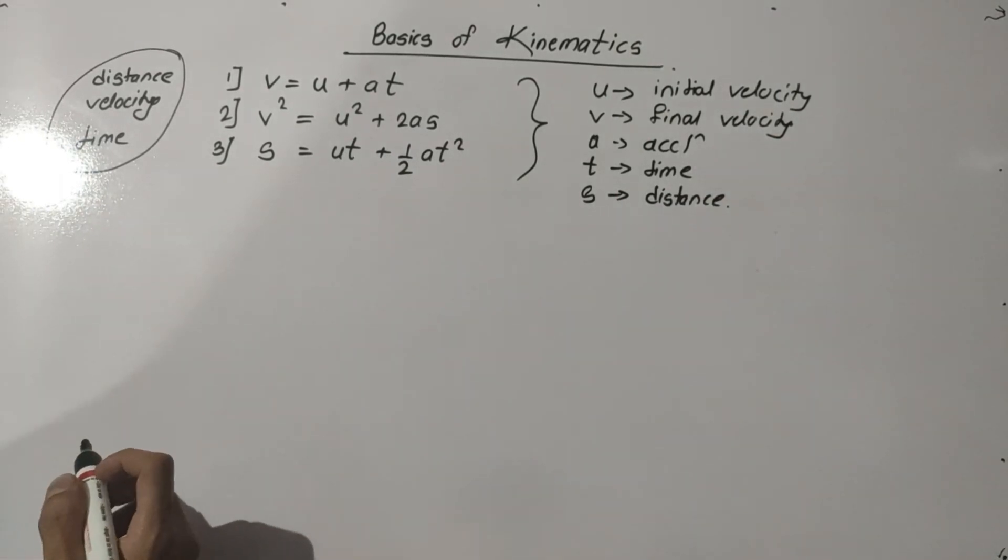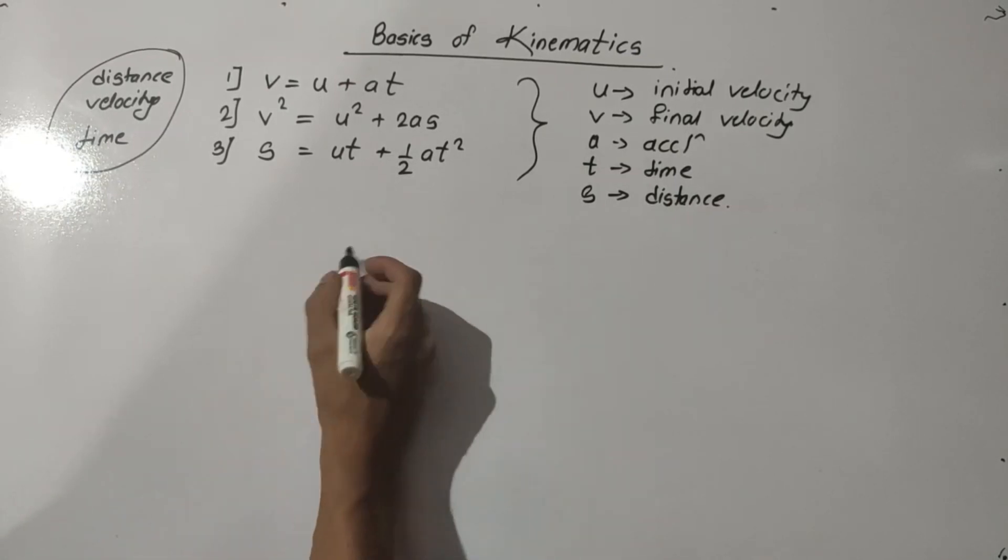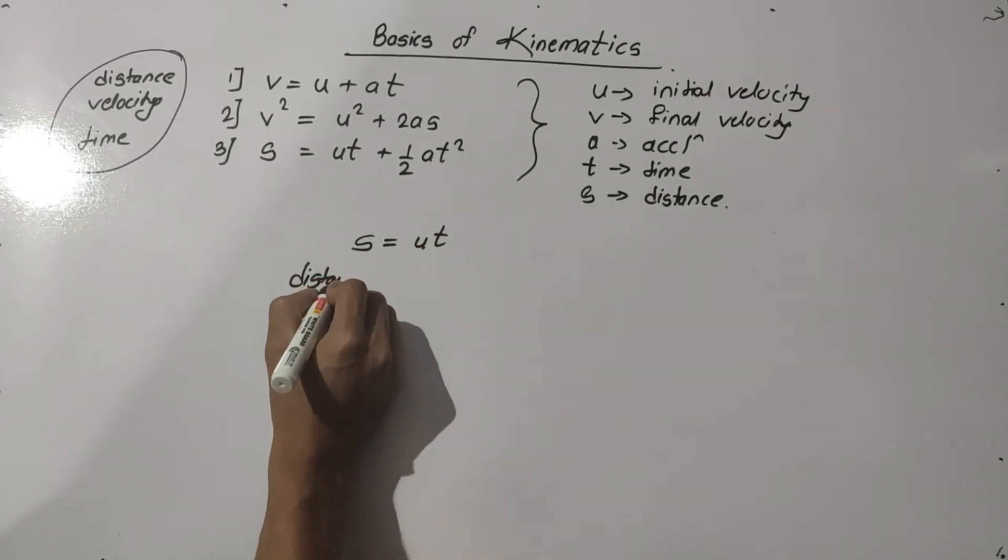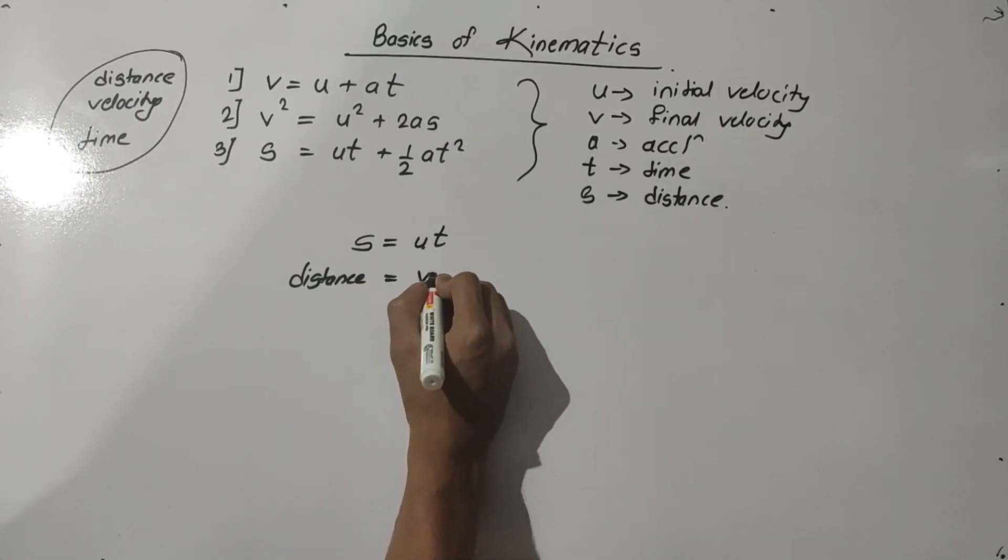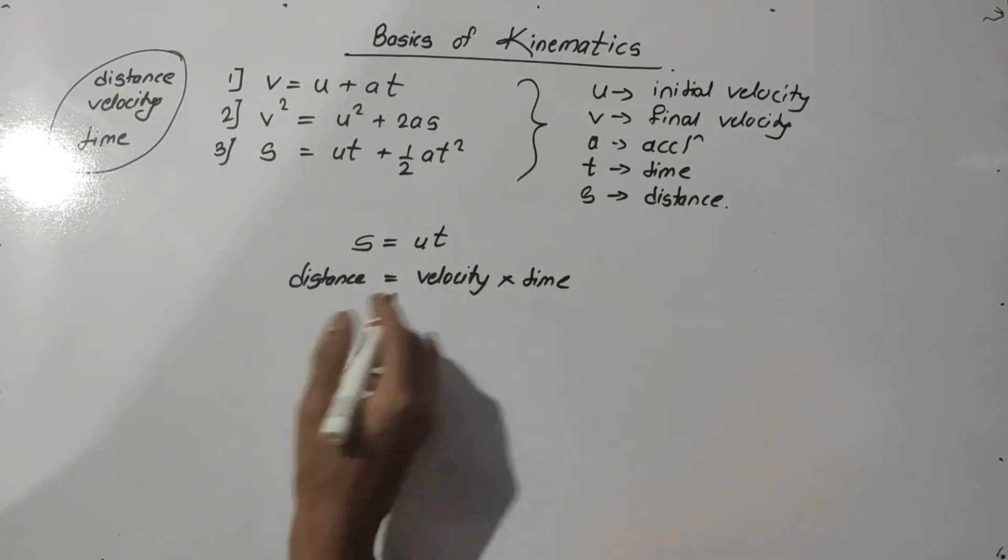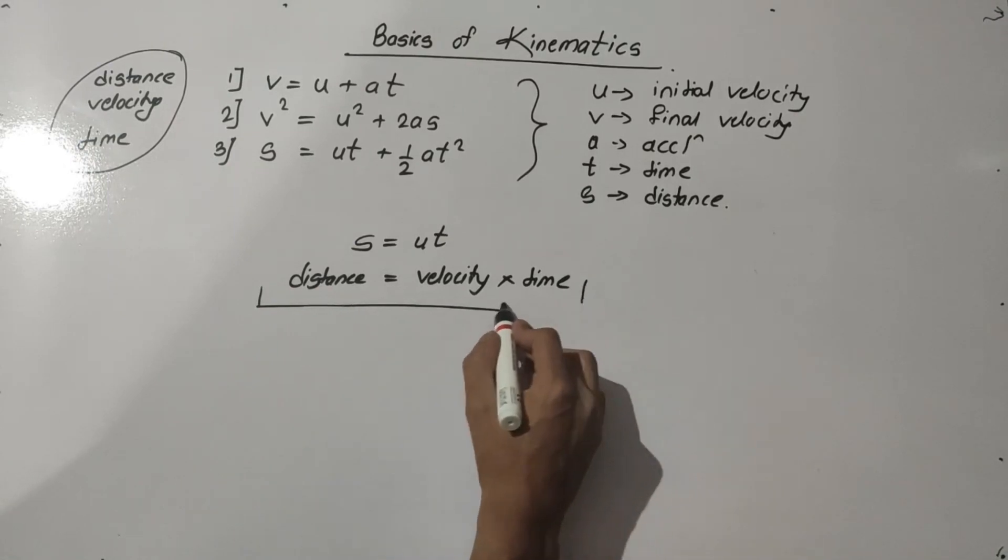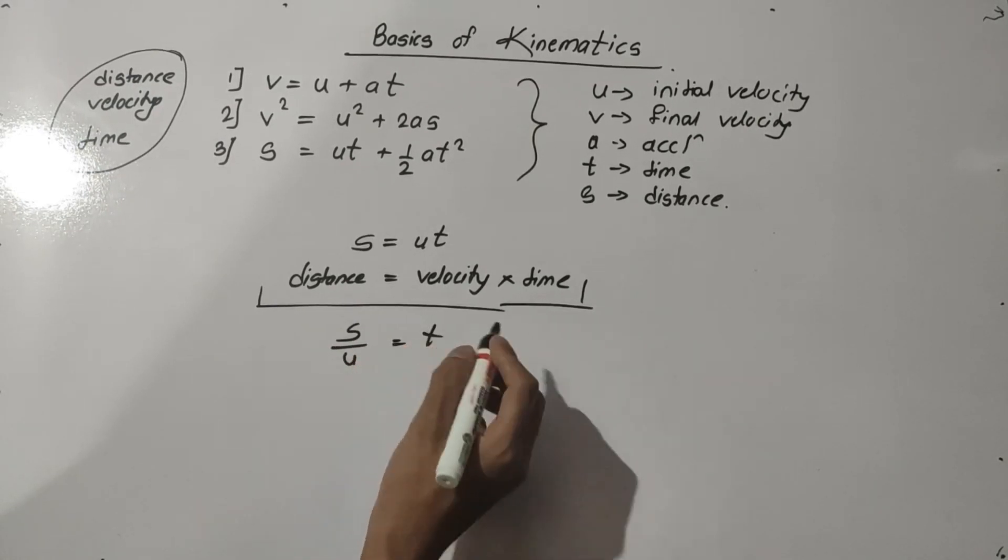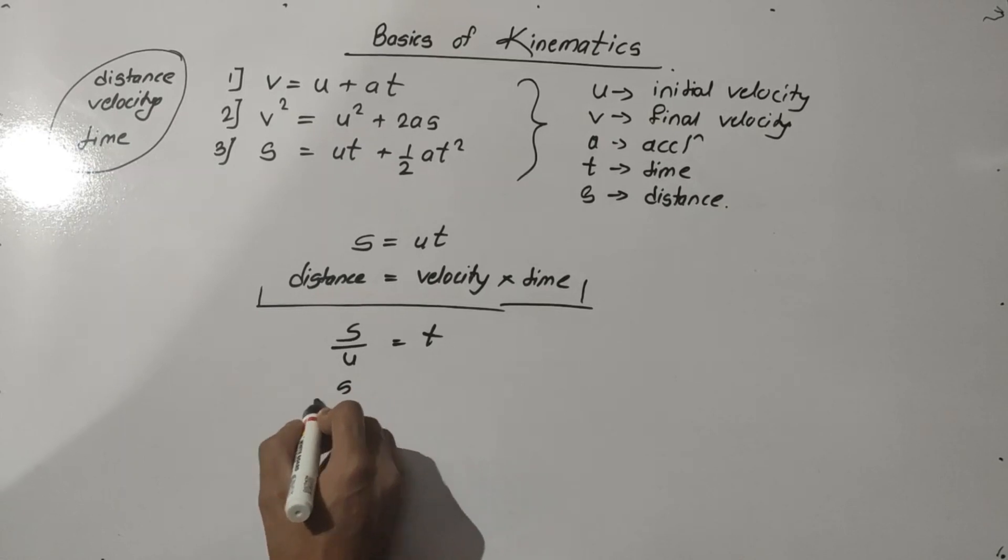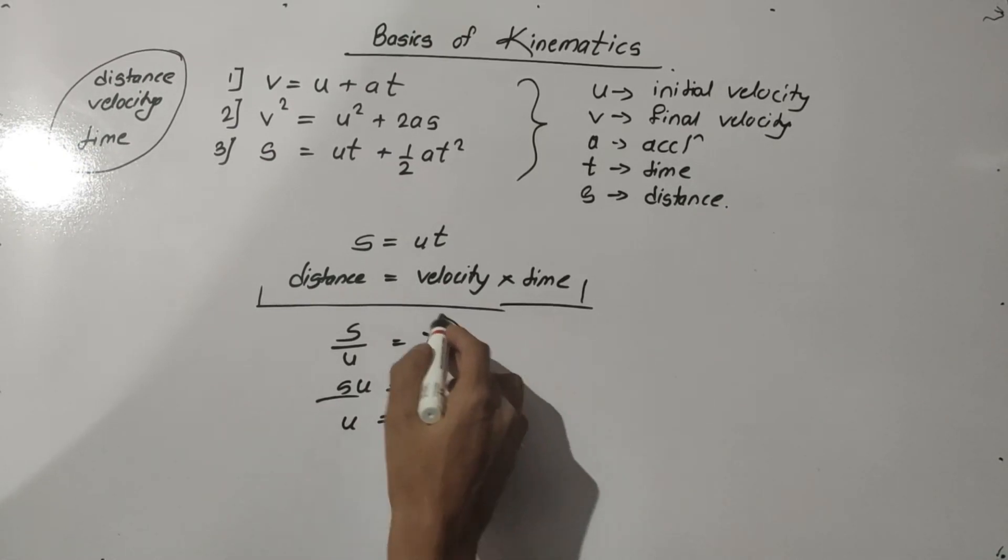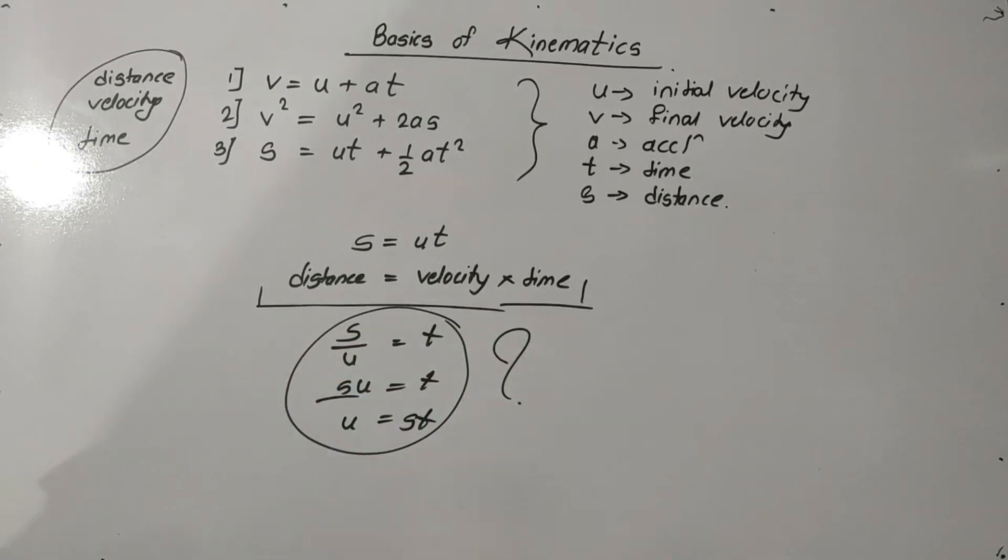Though we see these three formulas, most of the time students use the formula S equals UT - that is, distance equals velocity into time. Sometimes students get confused whether S by U equals T or U equals ST. So this is the confusion. Today we will discuss how this formula gets derived.